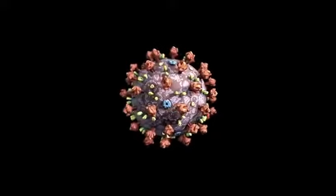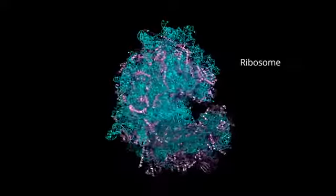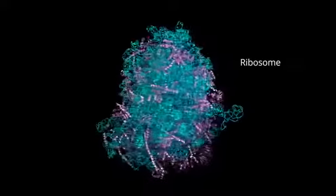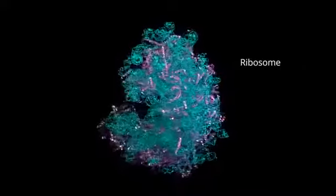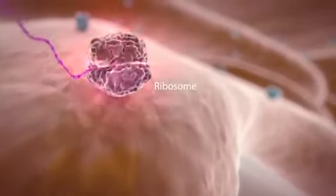The coronavirus, on the other hand, doesn't need to enter the host cell nucleus. It can directly access parts of the host cell called ribosomes. Ribosomes use genetic information from the virus to make viral proteins, such as the spikes on the virus's surface.